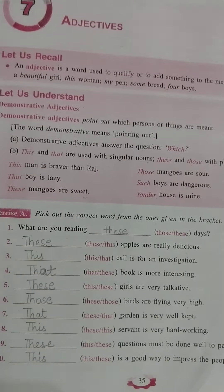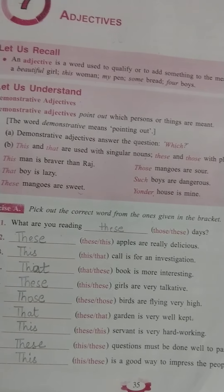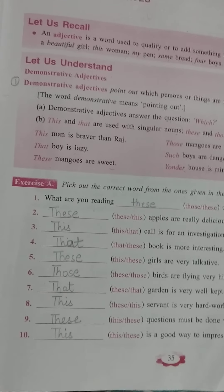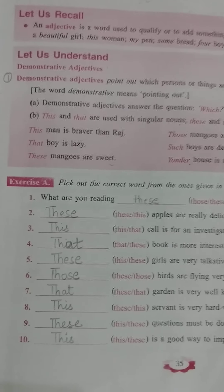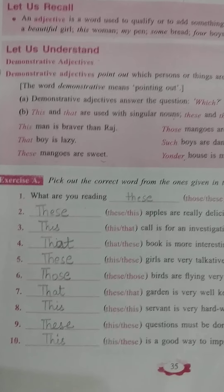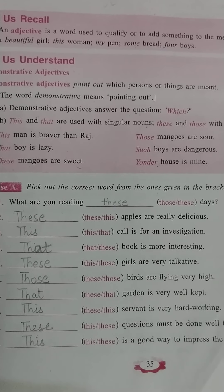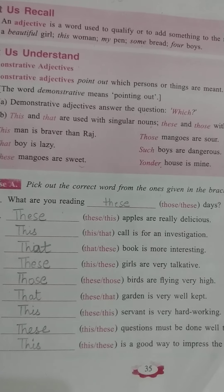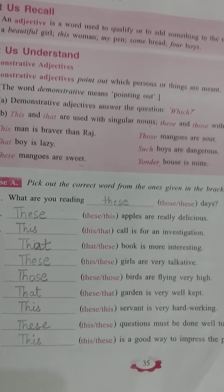Now come to exercise A: pick out the correct word from the ones given in the bracket. You have been given two options and you have to choose one correct option. First sentence: 'What are you reading these days?' — these days, because days is plural, so 'these' is used here. Second: 'Dash apples are really delicious' — these apples, because apple is plural, so 'these' will be used here.